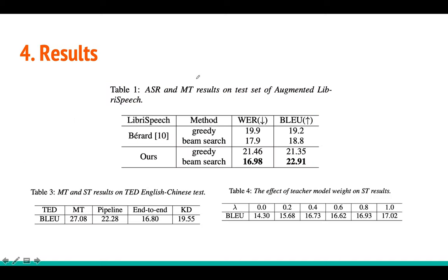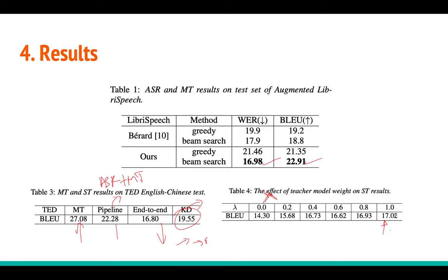In the results on Augmented LibriSpeech, the proposed method achieves a lower WER and better BLEU score compared to baselines. On the TED English-Chinese dataset, the MT upper bound gives a BLEU score of 27, the pipeline (ASR + MT) gives around 22 BLEU, end-to-end ST gives 16.8, and using knowledge distillation gives very good performance. Setting lambda equal to 1 gives a BLEU of 17.02, demonstrating the benefit of knowledge distillation.